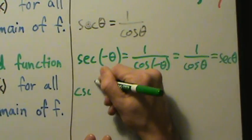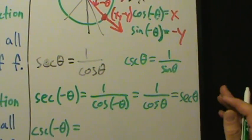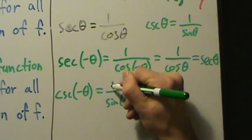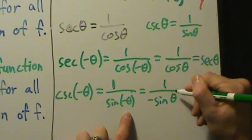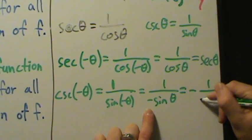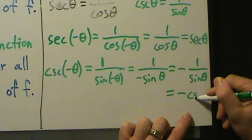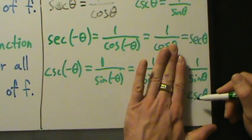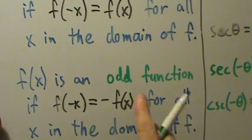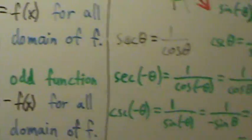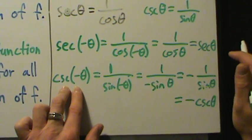For cosecant: cosecant of theta equals 1 over sine of theta. So cosecant of negative theta equals 1 over sine of negative theta. Since sine is odd, sine of negative theta equals negative sine of theta. So we have 1 over negative sine of theta, which equals negative 1 over sine of theta, which is negative cosecant of theta. Therefore cosecant of negative theta equals negative cosecant of theta — that's an odd function. We do have domain restrictions, but we'll cover those when we get to the graphs.